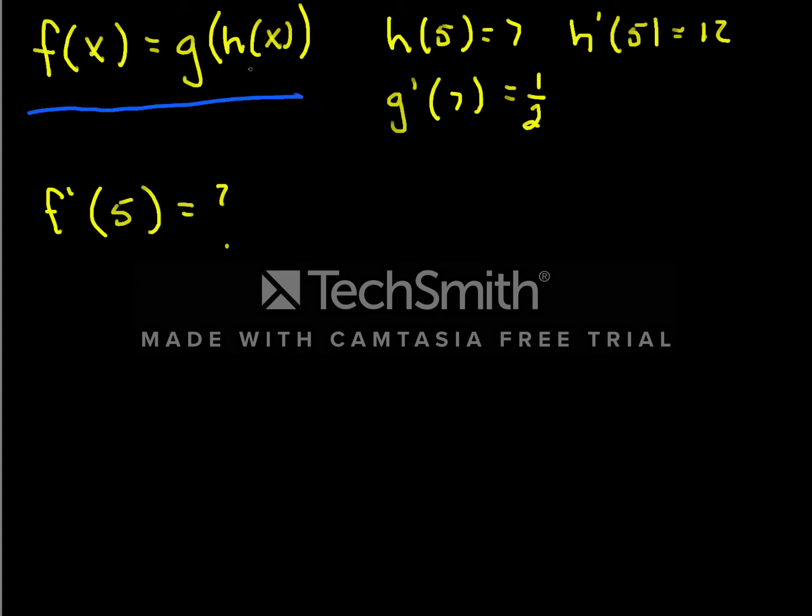All I know is that h(5) = 7, h'(5) = 12, and g'(7) = 1/2. But the chain rule tells us exactly how to do this. Because by the chain rule, f'(x) is the derivative of the outside function, so that's g. So it's g' evaluated at h(x) times the derivative of the inner function, so that's h'(x). So this is our chain rule.